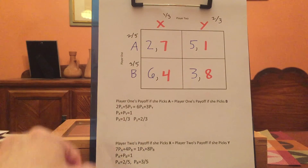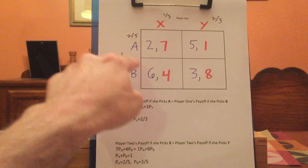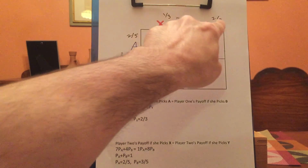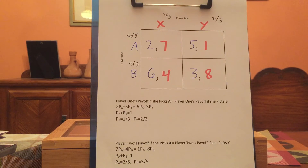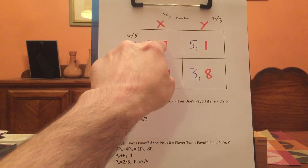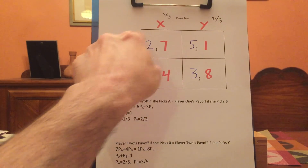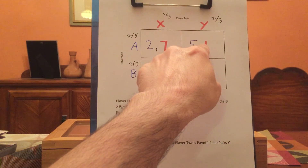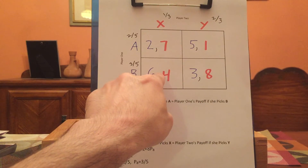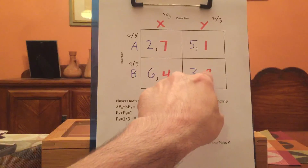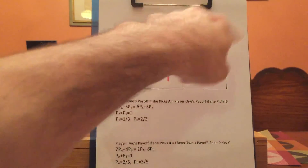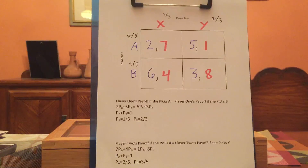So this is a Nash equilibrium where A is played two fifths of the time, B is played three fifths of the time, X is played one third of the time, and Y is played two thirds of the time. In that Nash equilibrium, the parties end up in each quadrant with probability equal to the product of the corresponding strategies — two fifths times one third, two fifths times two thirds, three fifths times one third, and three fifths times two thirds — and of course the sum of those four things should be one.